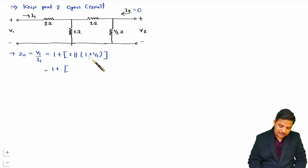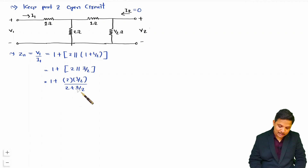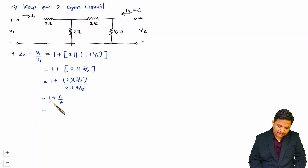When you solve this type of impedance, start from the innermost part. So 1 + 1/2 = 3/2. Now 2 parallel with 3/2 gives 2 × (3/2) divided by (2 + 3/2). Taking LCM of 2, the numerator is 6 and denominator is 4 + 3 = 7. So we have 1 + 6/7, and taking 7 as LCM that gives (7 + 6)/7 = 13/7. So Z11 = 13/7 ohms.